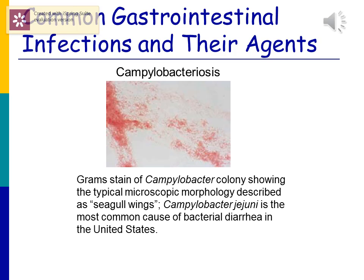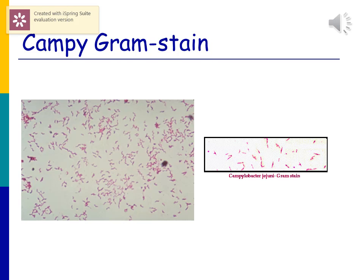Here is a gram stain of Campylobacter. Campylobacter has a curve to it, just like Helicobacter has a curve and Vibrio has a curve. Campylobacter tends to be described as seagull wing-shaped — two curves coming together looking like seagull wings. Campylobacter jejuni is the most common cause of bacterial diarrhea in the United States. Not all organisms on a gram stain will show a curve, and you really can't look at a gram stain and definitively say that's Campylobacter, since Vibrio is classically comma-shaped and Helicobacter can also have a curve.